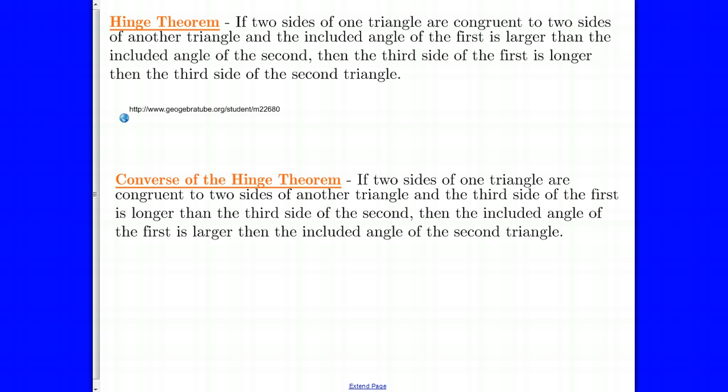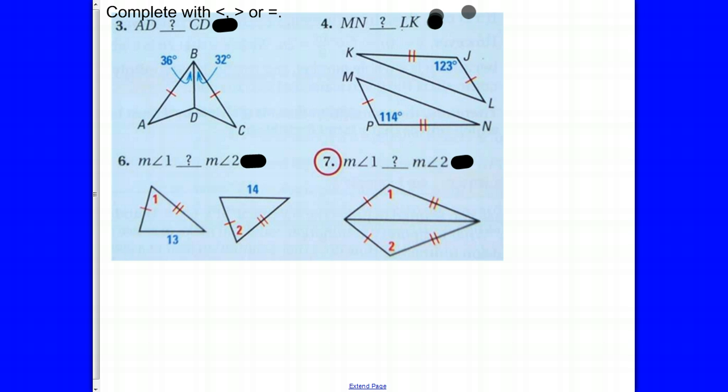The converse goes in the other direction. If you've got your two pairs of congruent sides and you know the third side is longer than the other third side, then the angle opposite the longer side is going to be greater than the other angle. It's such a simple idea it's kind of weird to explain, so let's look at some examples.